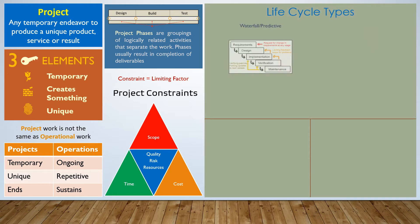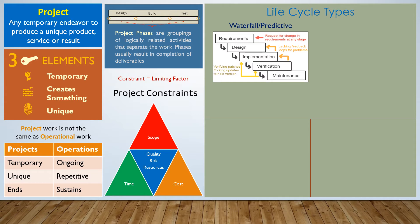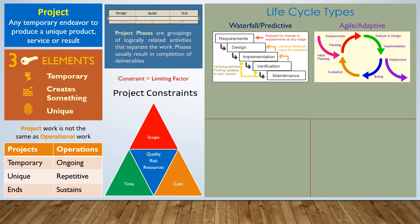There are a couple of life cycle types you need to know: the waterfall or predictive life cycle, and the agile or adaptive life cycle. Waterfall project life cycles have a well-defined scope of work — for example, building a house that has a blueprint, where we know exactly what we need to do.